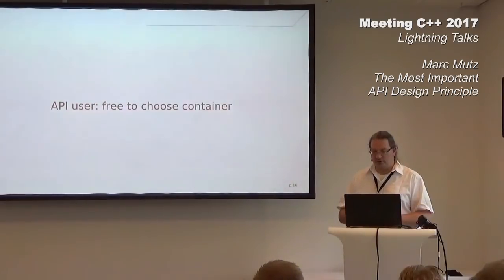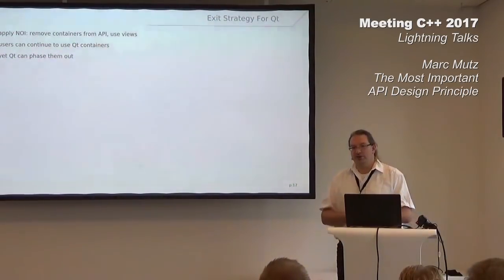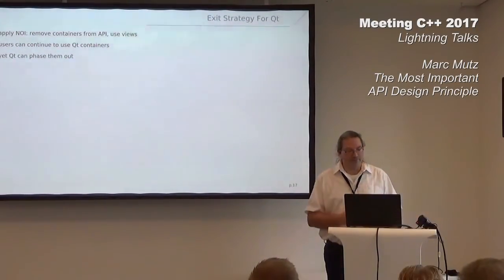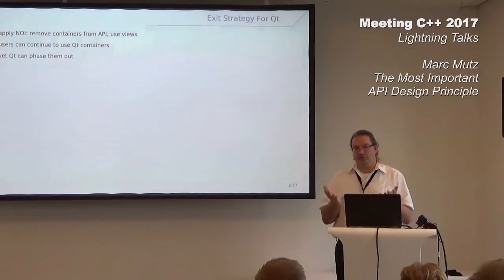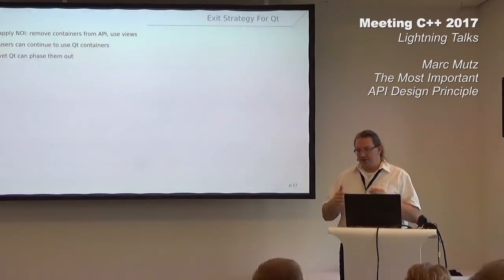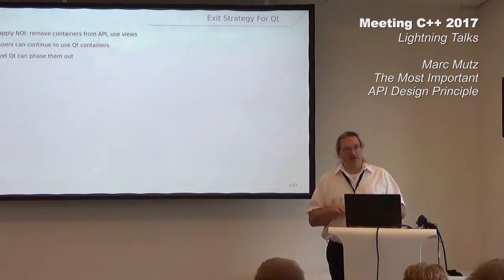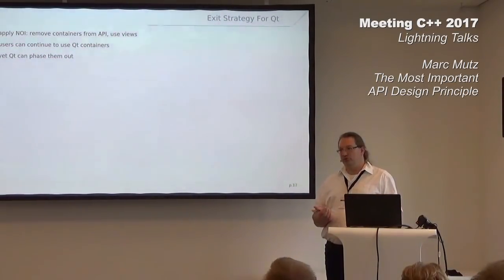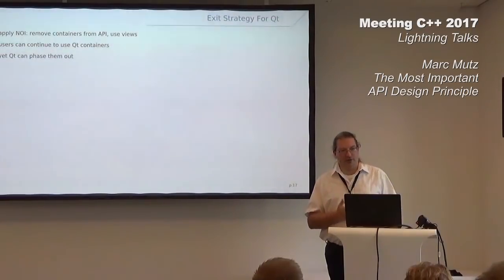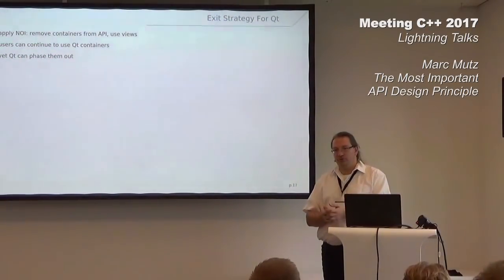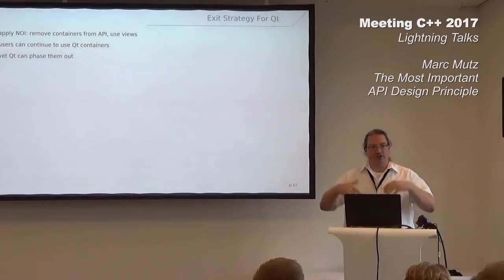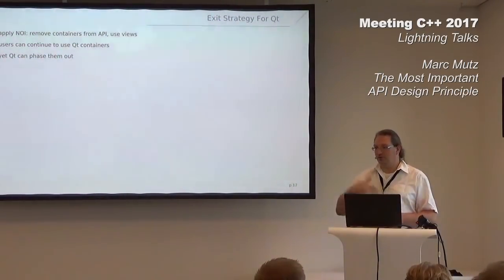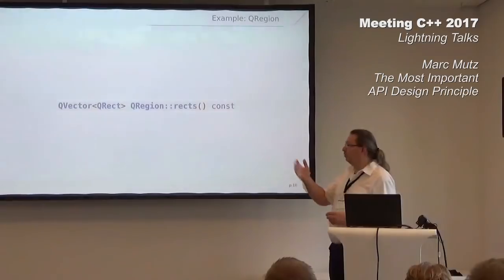So what would the exit strategy for Qt under this idiom look like? First, apply NOI — remove containers from the API, use views for setters. That's trivial; you can use the same function name, use overloading, and the old code will still work. We need to provide a new story for users that's better than what we have now. That story is: use views, use getters that return views and not owning containers. Once we've moved all users onto that new story, we can phase out the Qt containers.